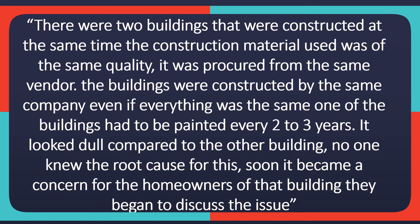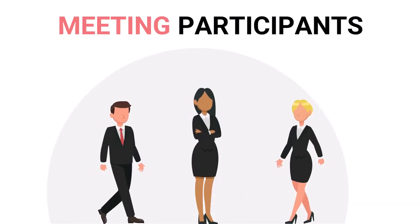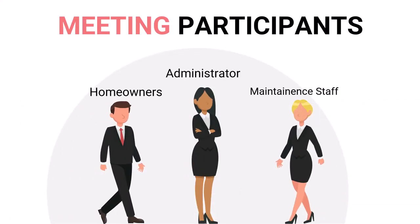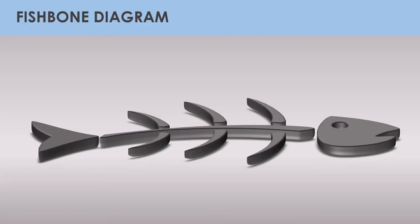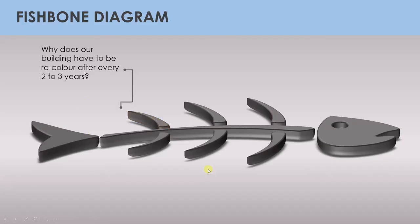The homeowners began to discuss the issue. The building administrator called for a meeting that included homeowners, the maintenance staff, and an administrator well-versed with using the 5-why analysis tool. The administrator is the person who will ask the questions. This is the first question by the administrator.